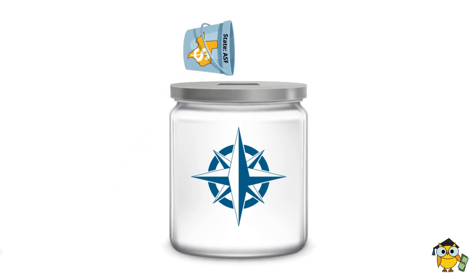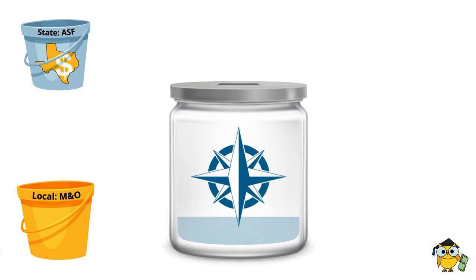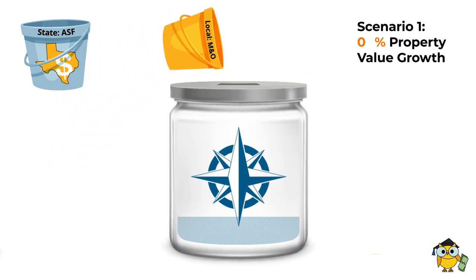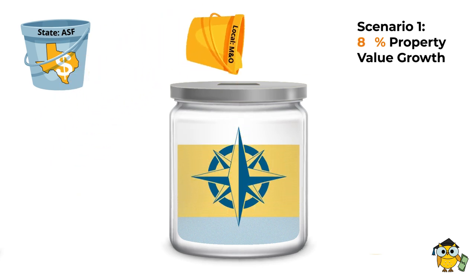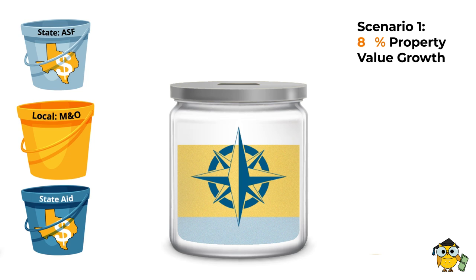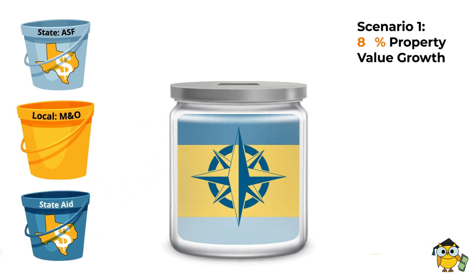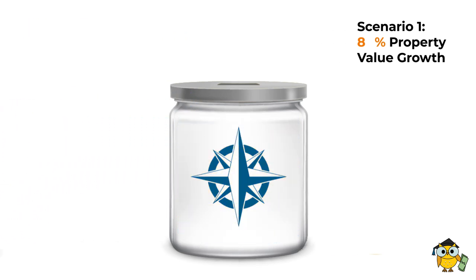The next bucket and the largest contributor is the local collections from the M&O tax rate. In this scenario, using Leander ISD as the example district, we're going to assume that there was 8% property value growth from the previous year. This leaves a little room at the top of the jar. Because the tier one jar is guaranteed revenue for a school district, this last bucket of state aid fills in the remainder. In the next scenario, let's say Leander ISD sees 18% growth.